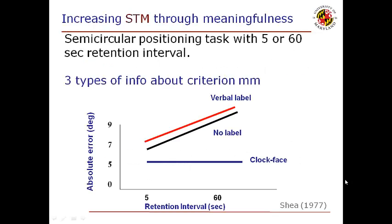Capacity can also be increased through meaningfulness. Say a person was given feedback after a certain semi-circular movement — how meaningful the feedback was can help in the retention process. A verbal label is feedback given in terms of 'good job,' 'not so good,' or 'maybe you should do a little better.' Whereas no label means you just don't care. The clock face label means, for instance, the coach says the person moved to close to the 2 o'clock position. Based on the way feedback is given, the process of retention is better.